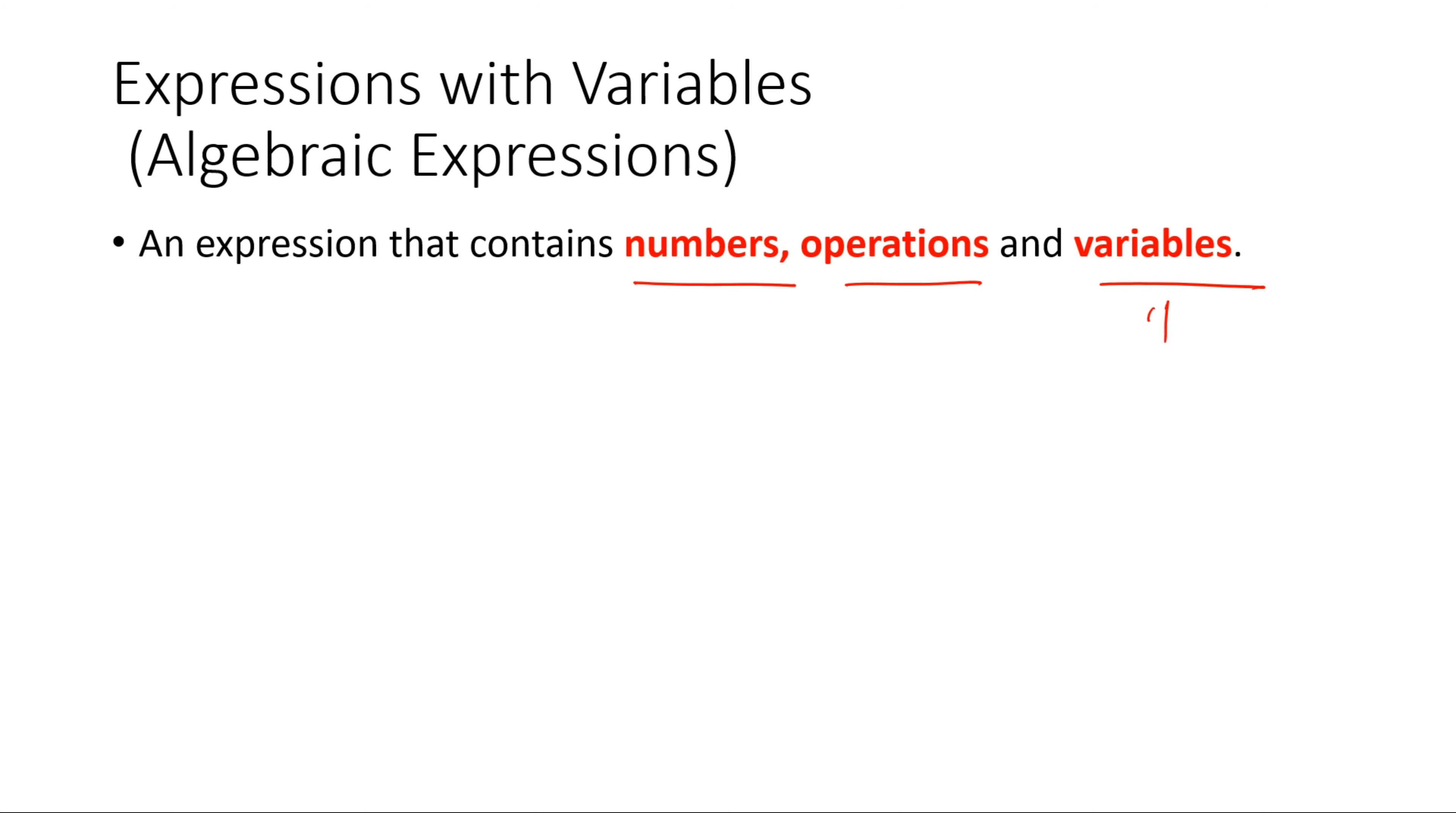Here variable means you can take up any letter like A, B, C, X, Y, Z, L, B, any of these alphabets you can use. These are basically numbers. These represent numbers but we use letters to represent unknown numbers.